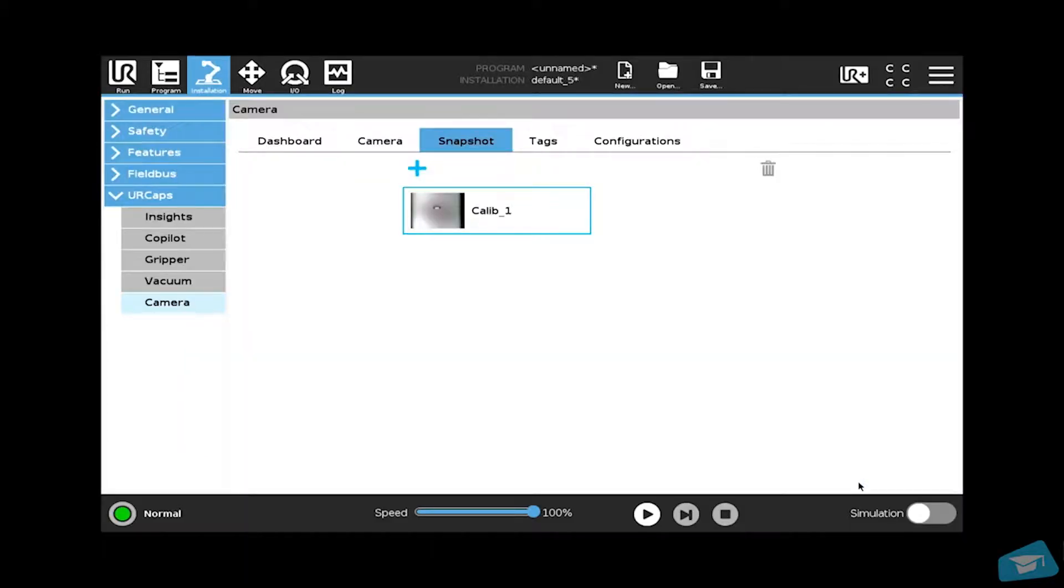Once the calibration has been accepted, the calibration performed will appear under the snapshot tab and will be available in the camera locate UR cap. To save the created calibration, tap save from the installation tab and save the installation file.